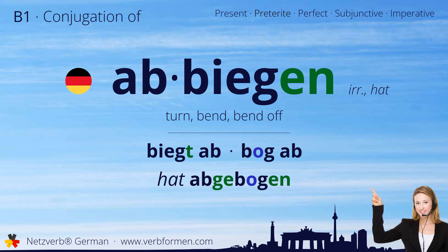Welcome to another learning video by Netzverb German, the network for learning the German language. Today we are going to learn how to conjugate the German verb abbiegen. Watch and listen to the forms carefully.